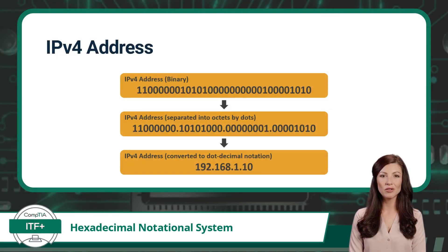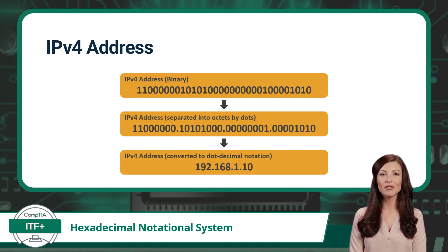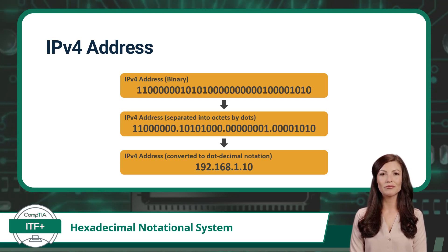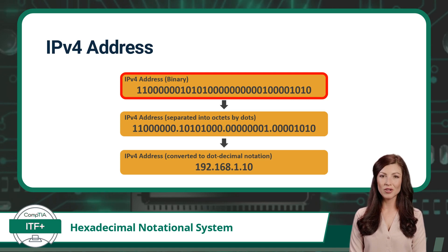It is worth noting that IPv4 addresses use a specific type of decimal notation called dot decimal notation. IPv4 addresses identify a device in an Internet Protocol version 4, or IPv4, network. Dot decimal notation is a way of displaying a big number in manageable chunks.